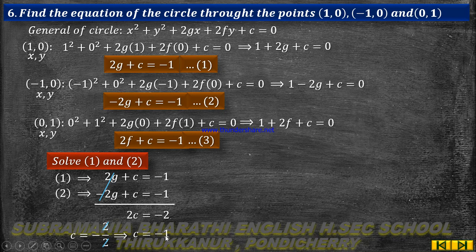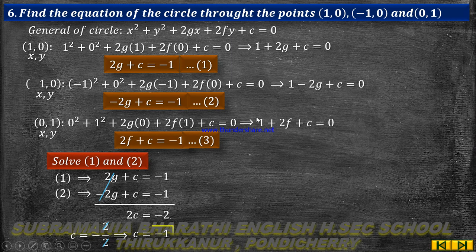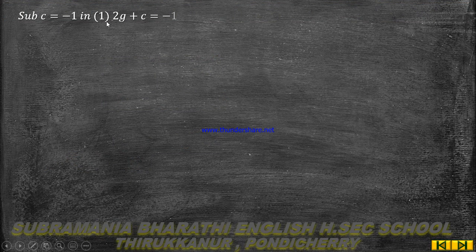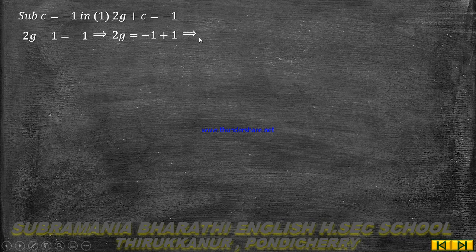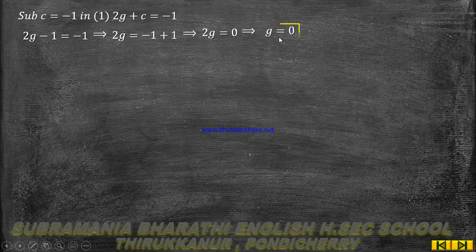After canceling, c equal to minus 1. Substituting c equal to minus 1 into equation number 1: 2g plus c equal to minus 1, so 2g minus 1 equal to minus 1. The minus 1 values cancel, giving 2g equal to 0, therefore g equal to 0.